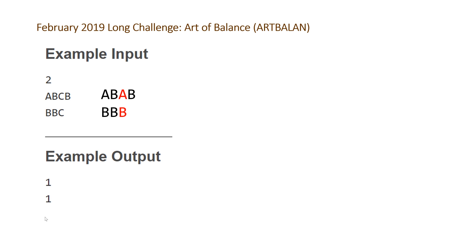This problem is pretty easy to understand, but due to the constraints we need to figure out an efficient way to find the minimum number of operations. The trick is that we need to know what number of characters to aim for. In our second example we're aiming for only one character, and in our first example we're aiming for two characters at the end, even though we started with three. Depending on our string, the optimal number of characters to aim for isn't clear, but we can actually just test every single number of characters.